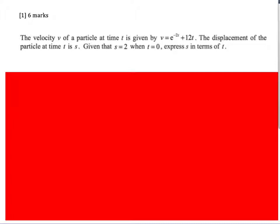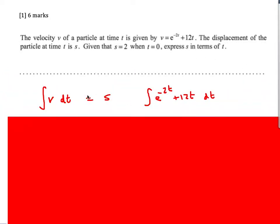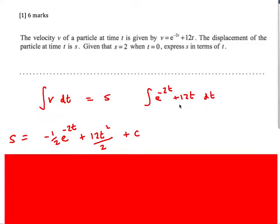The first question is a non-calculator question; most of the rest will be calculator. We're given an expression for velocity and asked to find displacement, plus some initial conditions to find C. We start by writing that the integral of velocity gives distance — worth one mark. Integrating, e to the minus 2t gives minus a half e to the minus 2t (using the chain rule), and 12t integrates to 6t squared. Don't forget the plus C.